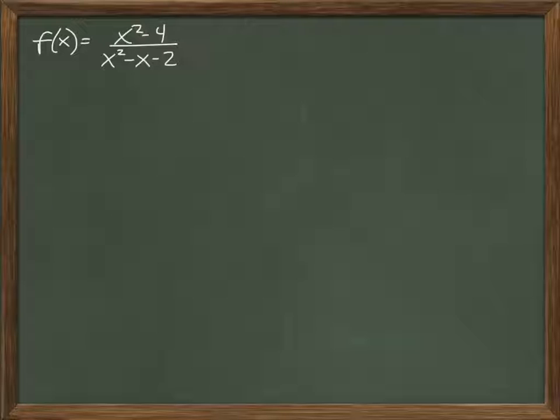And if I asked you to graph this rational function or do a rough sketch, the things we would need to know would be x-intercept, y-intercept, any vertical asymptotes that might exist, and any horizontal asymptotes that might exist.